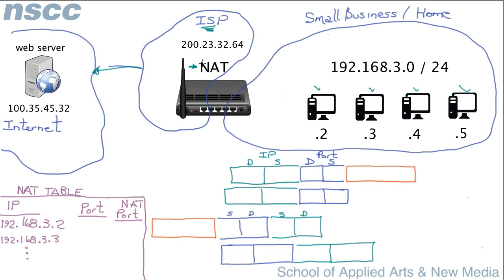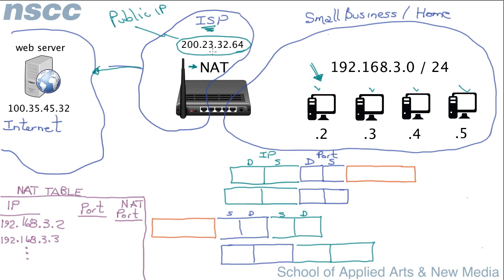Let's look at what happens when a client wants to get a web page from the web server. The ISP has given our organization a single public IP address — just one, even though we have several machines inside, and could have hundreds or even thousands. We only need to be given a single IP address. This is the main key of NAT — this is how it saves chewing up all the public IP addresses.